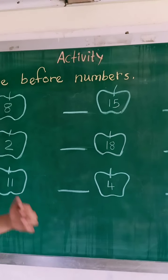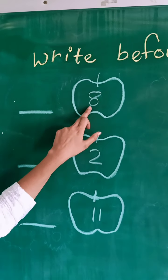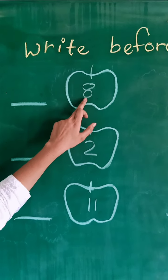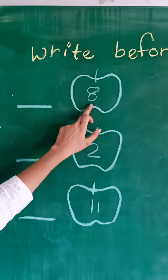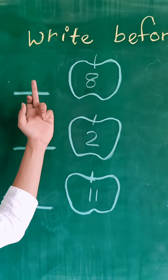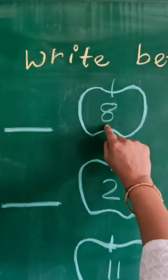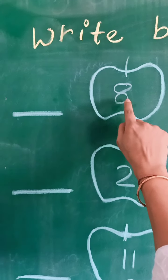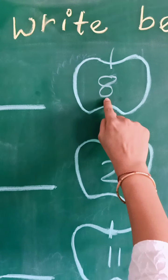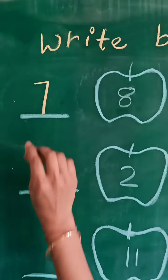Let's learn. Which number comes before 8? We speak 1 to 8 numbers. Let's speak: 1, 2, 3, 4, 5, 6, 7, 8. Which number we speak before 8? Number 7. So write here number 7.